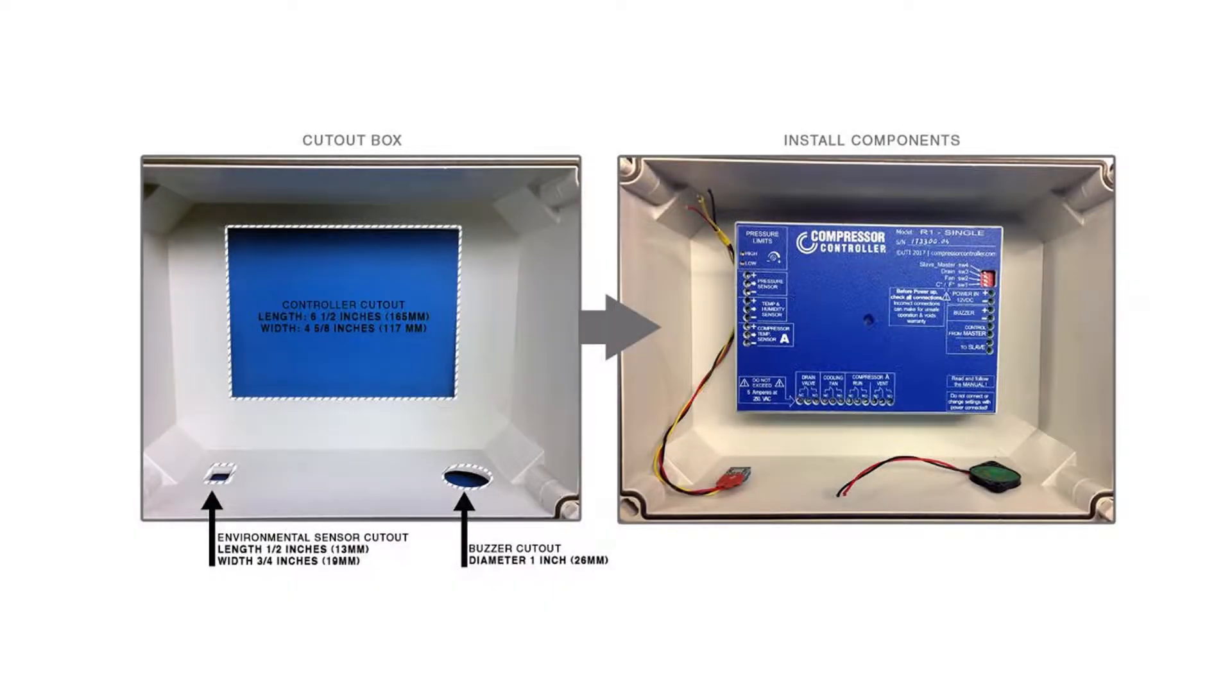The temperature and humidity sensor should be located in the same proximity where the air compressor sucks in air. After the openings have been created, the components can be mounted.